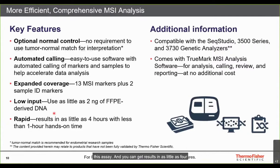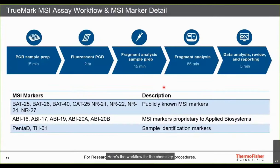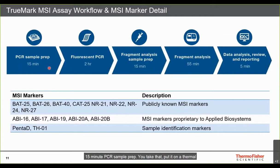Analytical validation was performed on the SeqStudio and 3500 series, and customers also report good results on the 3730. The software is provided at no additional cost. Workflow: after DNA extraction from FFPE samples, a 15-minute PCR sample prep is followed by two hours on a thermal cycler, then fragment analysis sample prep, capillary electrophoresis, and FSA file import into software — an overall MSI call in four hours.